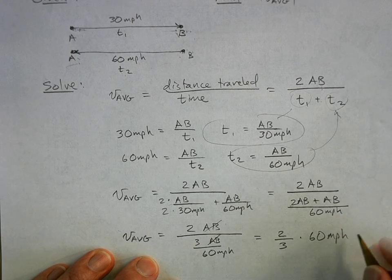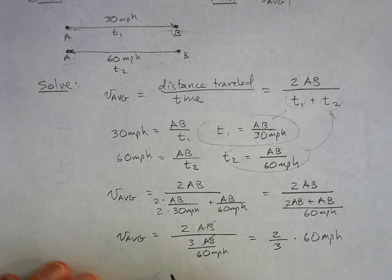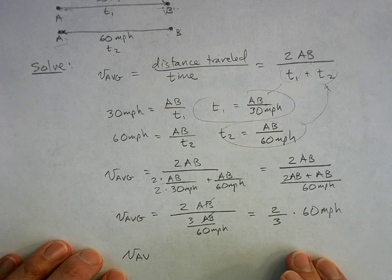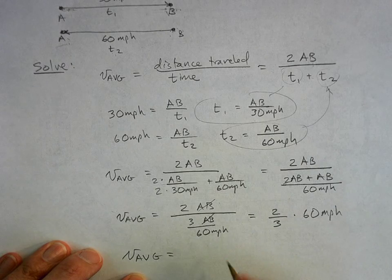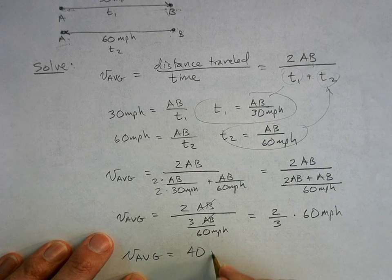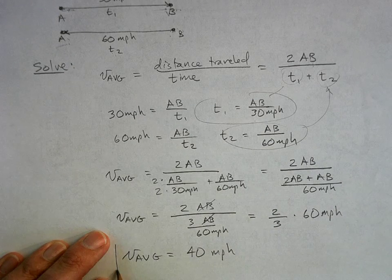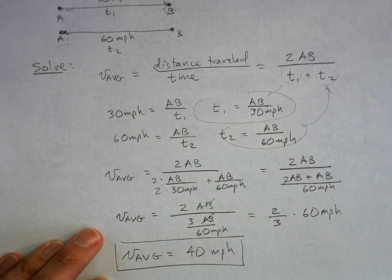And so the average speed - well, 2/3 of 60 is 40, so the answer is 40 miles per hour instead of 45.